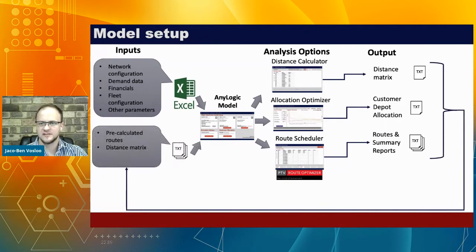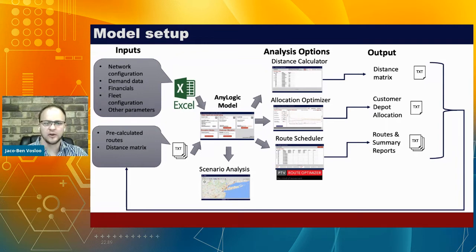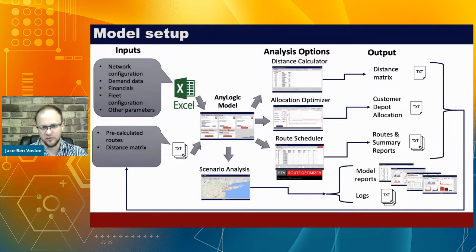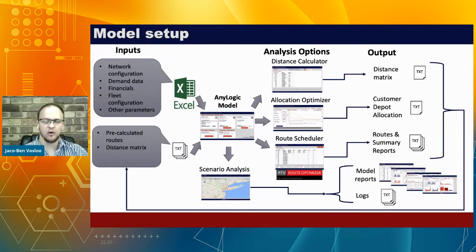All this information was stored in separate text files and imported into the model for the key part: scenario analysis. For a specific scenario, we could determine the distances, the best customer-to-depot allocations, the most likely routes, and the financial and operational performance. Inside the model, users could view financial reports, operational charts, and detailed outputs — enabling comprehensive analysis of the different scenarios they were considering as well as generating new alternative scenarios.